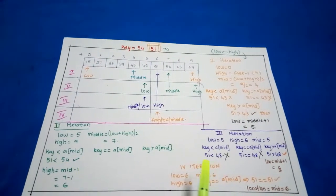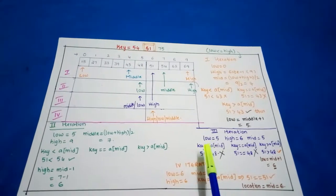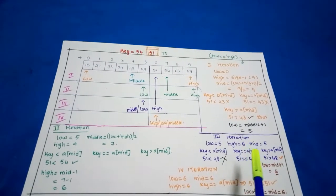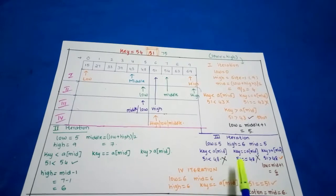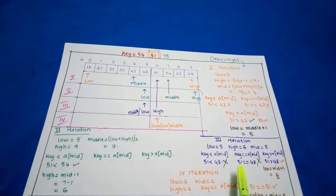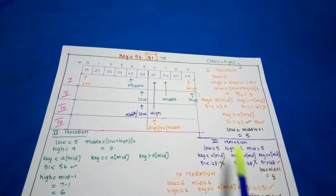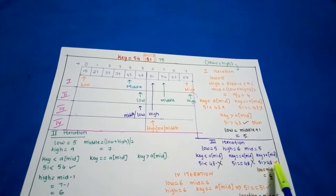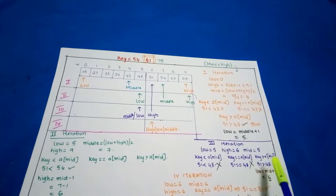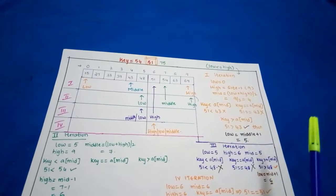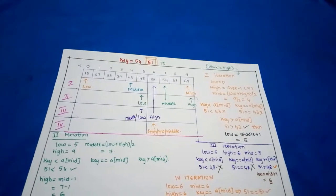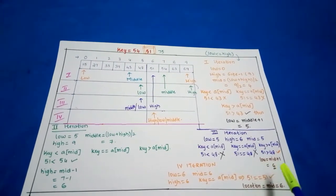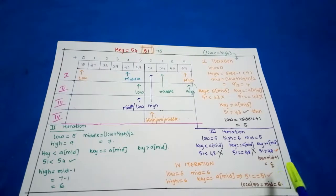In the third iteration, low = 5 and high = 6. The mid value is (5 + 6) / 2 = 5. We check key == a[mid]: 51 == 48 is false. Then key < a[mid]: 51 < 48 is also false. Key > a[mid]: 51 > 48 is true. That means the key is again on the right side, so we ignore the left side and alter low: low = mid + 1 = 6.